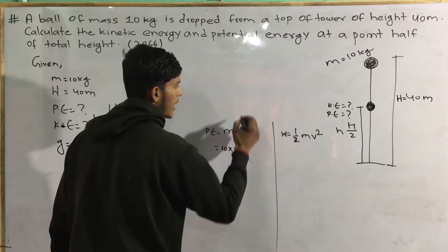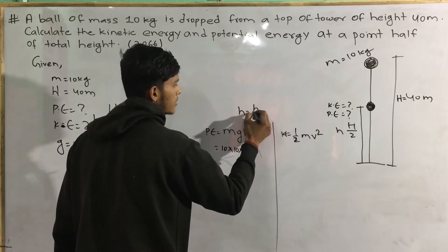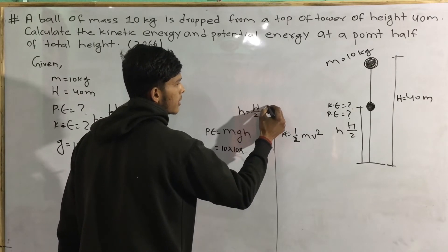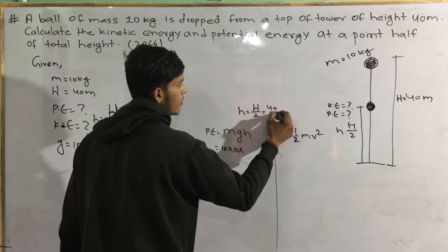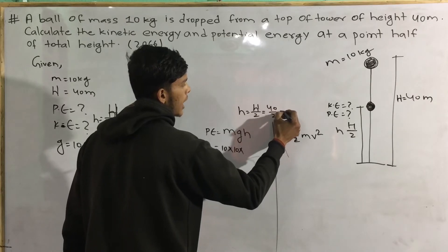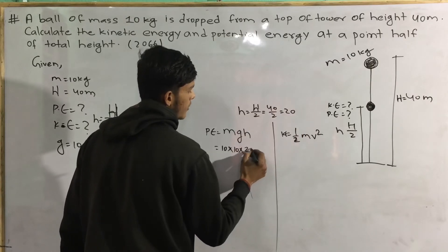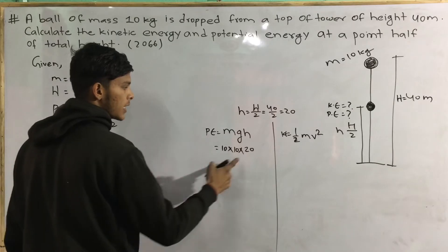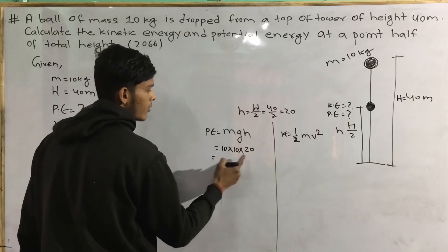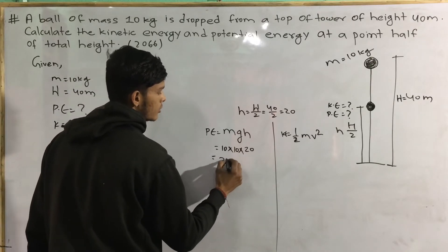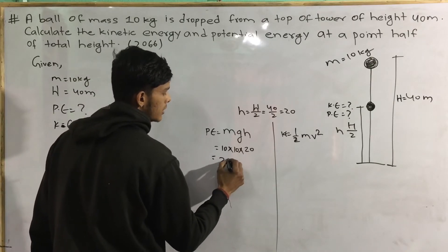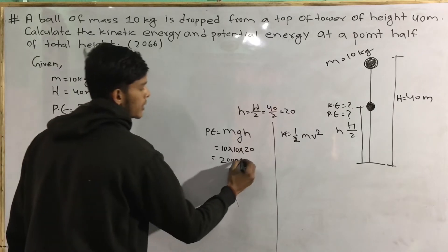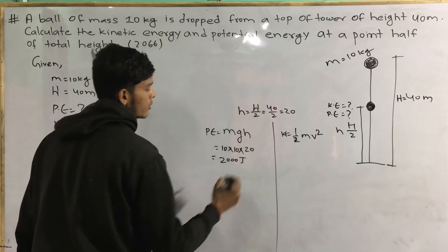For the height at half point, we divide 40 by 2, which gives 20. So the height is 20 meters. Using this, one half m v squared can be calculated from the energy at this height.